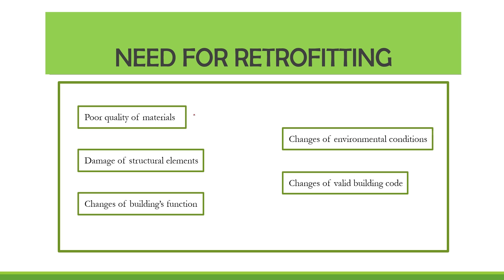What are the needs for retrofitting? You can retrofit your building if there is poor quality of construction material used, or if there is damage to any structural elements like columns, beams, and slabs. Also, if there is a change in building function — for example, converting from a residential to a public building — or a change in environmental conditions such as earthquake exposure or high winds, or a change in the building code.